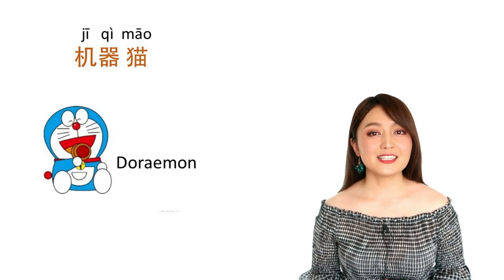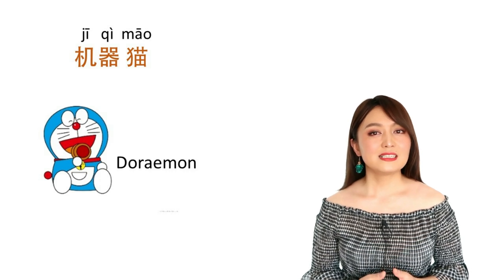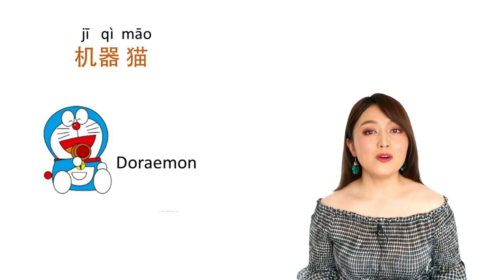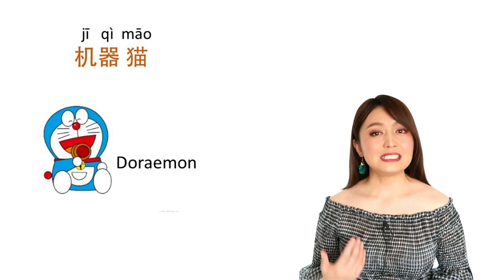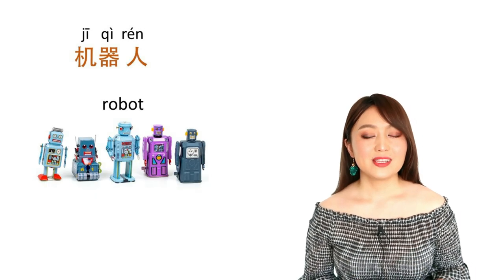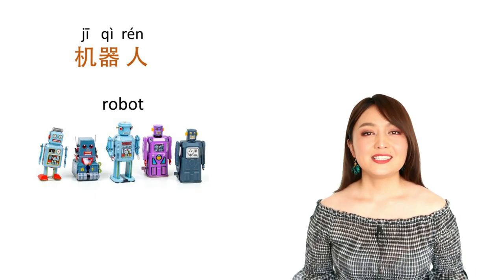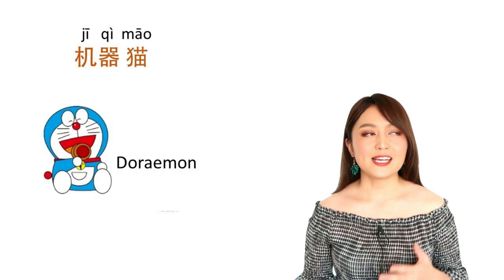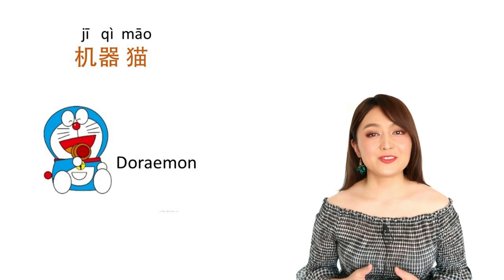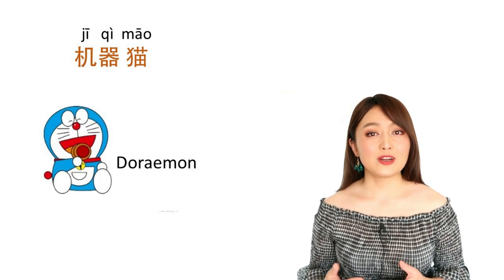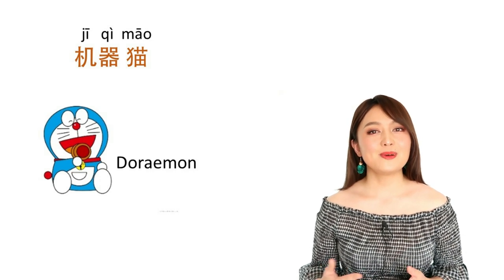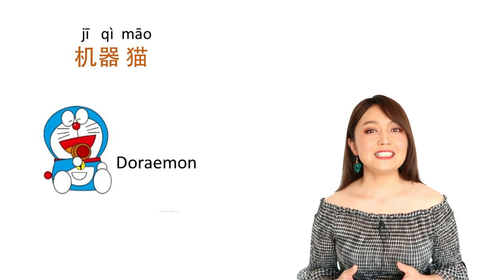And another cat — 机器猫。 Do you know this one? 猫 is cat, and 机器 is machine. You know that 机器人 is robot. So 机器猫 is a robot cat. That is a Japanese cartoon figure — his name is Doraemon. In Chinese, another common name is 机器猫 — robot cat.